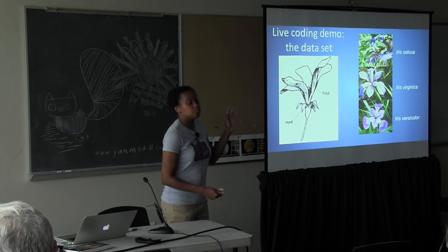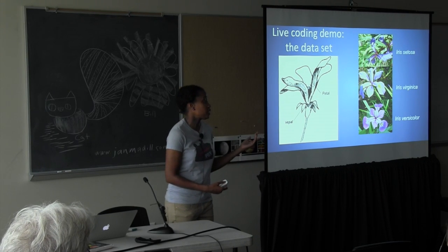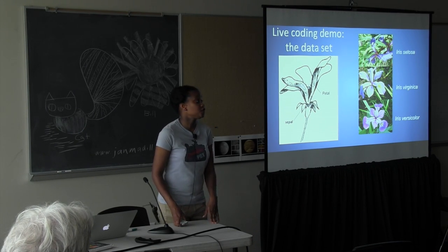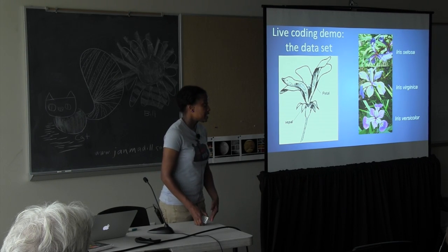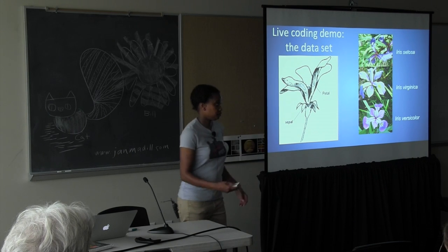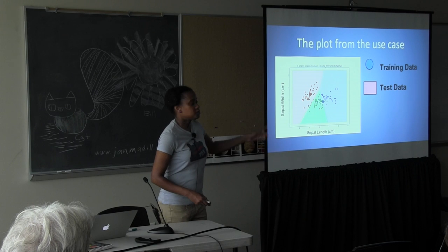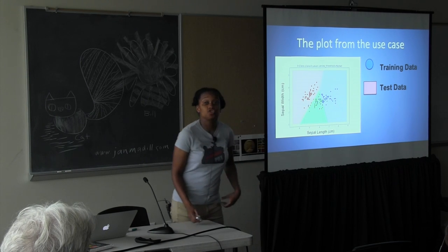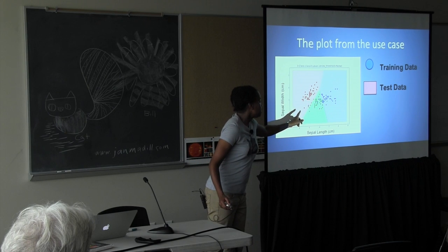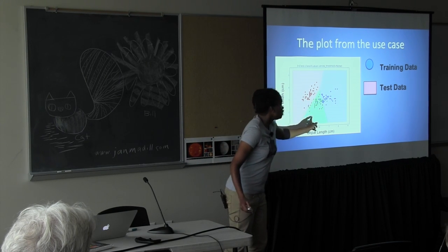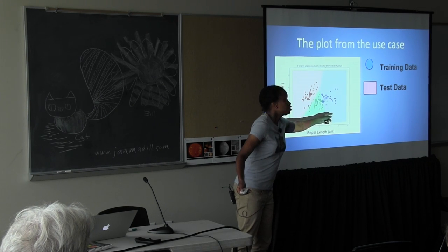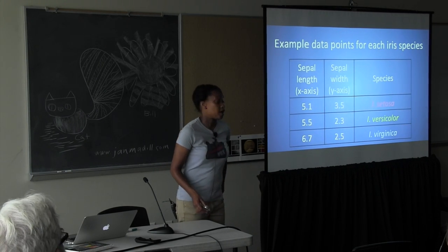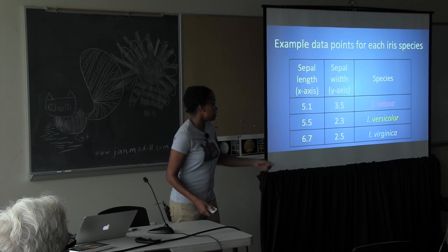The point of this live demo is to figure out what type of IRIS we have, and we're going to do that by looking at the length and width of the sepal and the petal. This is what our result will look like. The dots are the training data, and these three colors — pink, green, and blue — represent our test data. Here are the example data points for our IRIS species: sepal length and width across the different species.